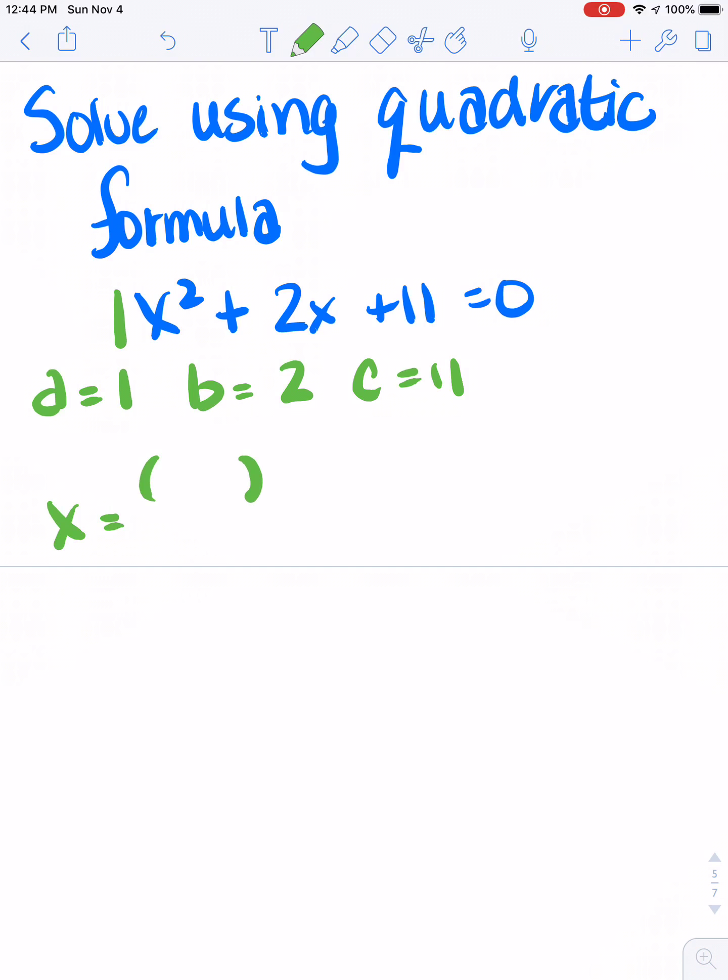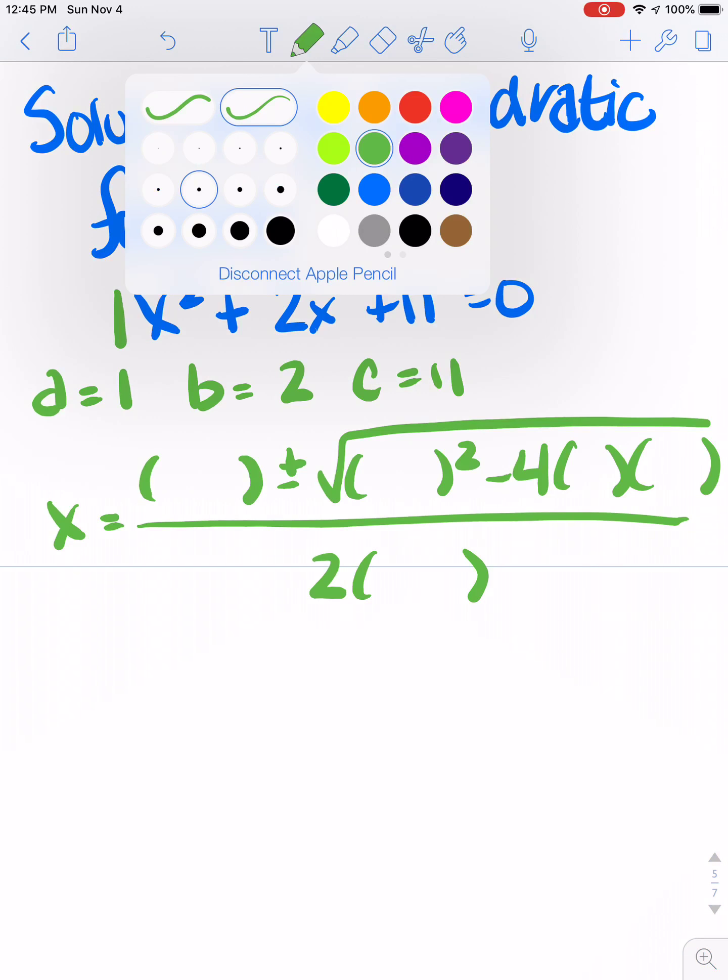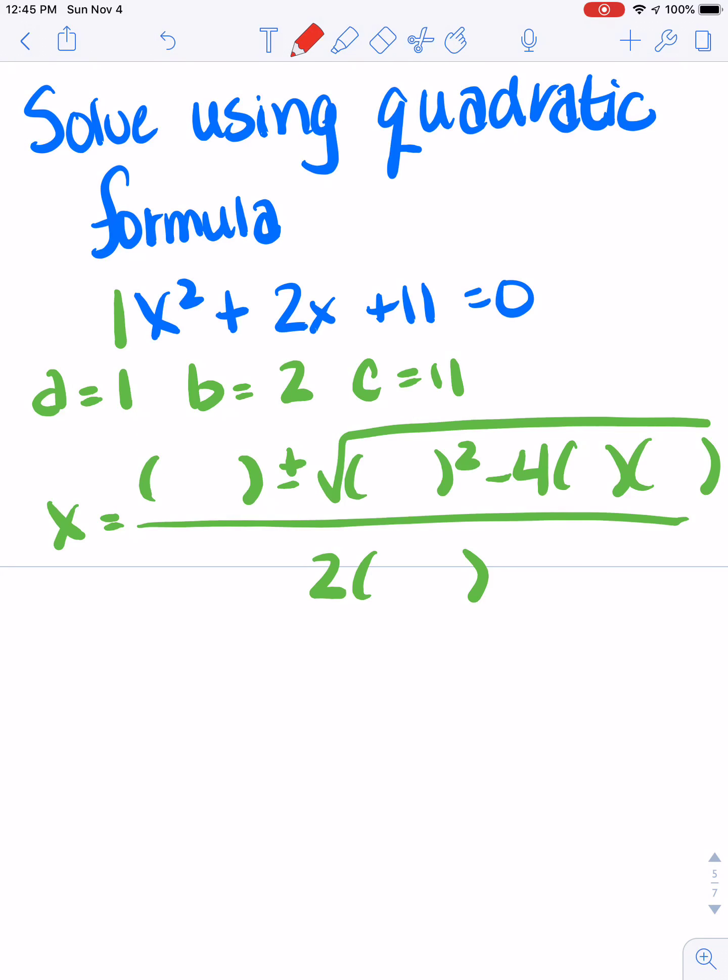So I'm going to go through and set up my parentheses stuff, just like I did before. Now a's are 1's, c's are 11, b is 2, so there's going to be a 2 here and a -2 there.